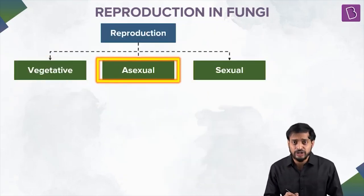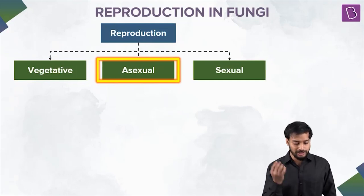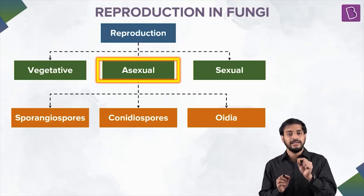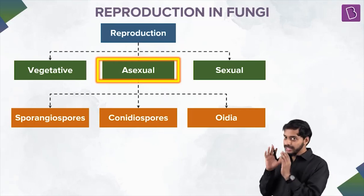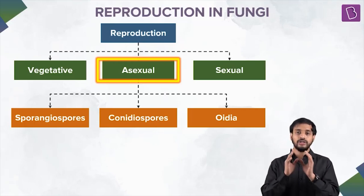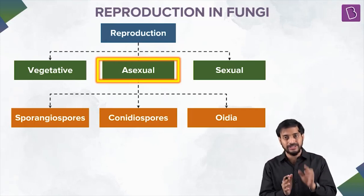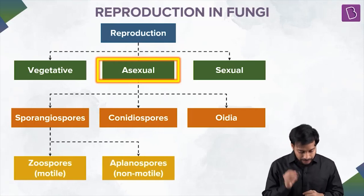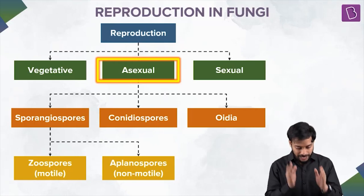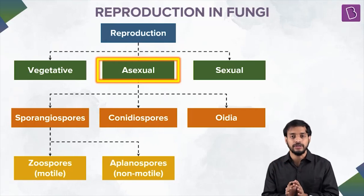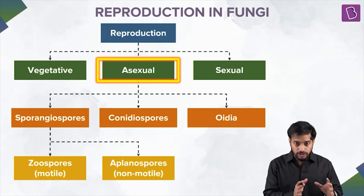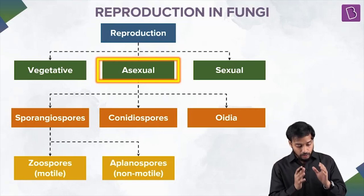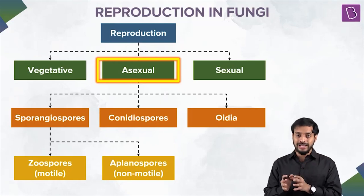Now let's talk about the asexual mode. Fungi is capable of doing all three. Asexual reproduction can happen through spores: the sporangiospores, the conidiospores, and the oidia. Sporangiospores can be of two forms — zoospores, which are motile and can move, and aplanospores, which are non-motile and cannot move. Next we'll look at conidiospores and oidia.